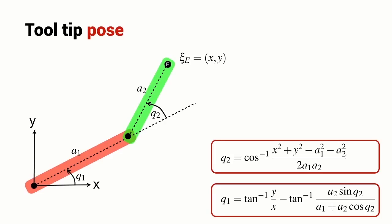We have an expression for the two joint angles Q1 and Q2 in terms of the end effector pose X and Y and a bunch of constants. You notice that the two equations are not independent. The equation for Q1 in fact depends on the solution for Q2.